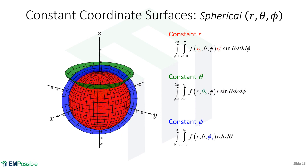Here are our constant coordinate surfaces in spherical coordinates. If the radial position component r is constant, we're integrating over a sphere — useful for a spherical charge distribution or wrapping a surface around something to integrate flux. If we set theta equal to a constant, we're integrating over a cone shape, which might represent an antenna. If phi is constant, we're integrating over a circular plane shape.